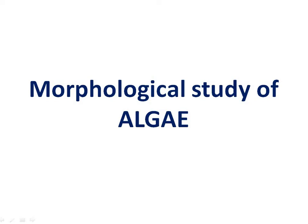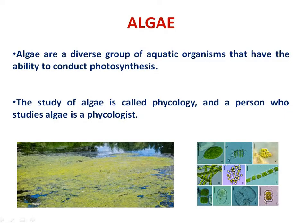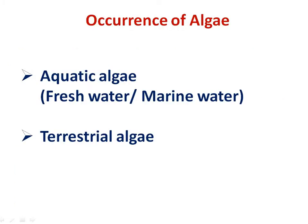Hello students, today we will study the morphological structure of algae. Algae are a diverse group of aquatic organisms that have the ability to conduct photosynthesis. Algae are chlorophyll-bearing lower plants which possess markedly different patterns of unicellular to multicellular organization. They may be either prokaryotic or eukaryotic. The study of algae is known as phycology, and phycologists are those who study algae. Generally, algae are mainly found in aquatic conditions — they may be either freshwater or marine.